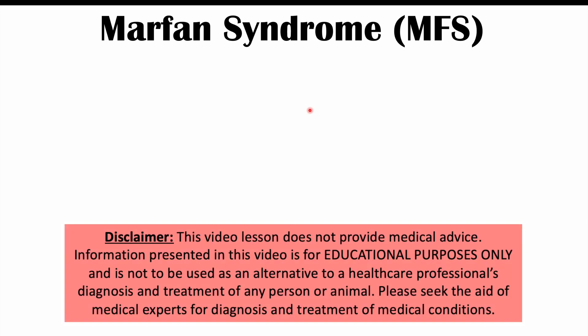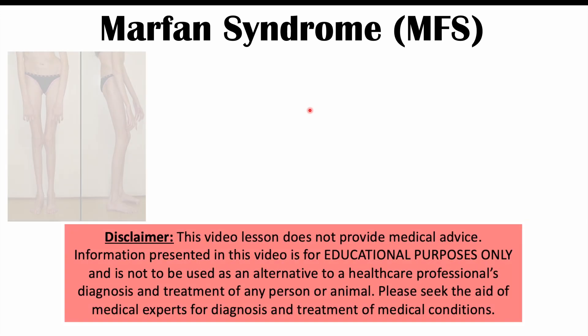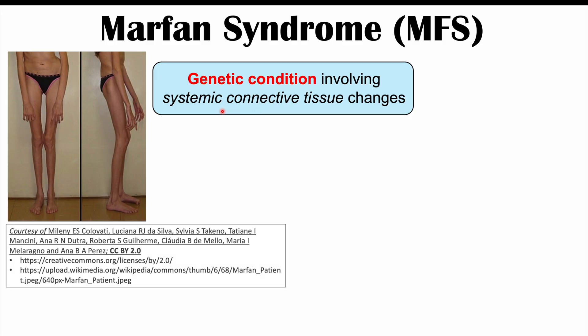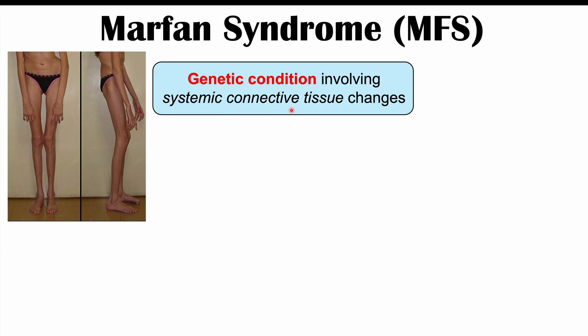Hi everyone. This lesson is on Marfan syndrome. Marfan syndrome is a genetic condition involving systemic connective tissue changes, so it's going to lead to a large variety of different clinical features, including changes to body shape. It'll also cause issues with the eyes, heart, and lungs. We'll discuss all this in more detail as we go through this lesson.